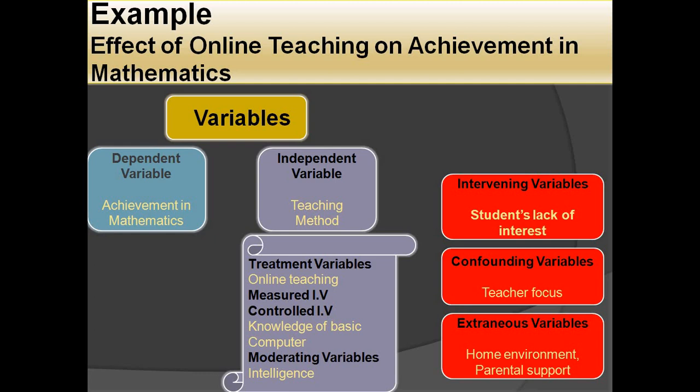Here is an example of a research problem: the effect of online teaching on achievement in mathematics. The dependent variable is achievement in mathematics. The independent variable is teaching method — online teaching versus traditional teaching. Treatment variable: online teaching. Controlled independent variable: knowledge of basic computers, which the researcher wants to control. Moderating variable: knowledge of basic computers or student intelligence. Intervening variables: students' lack of interest or lack of comfort with computers. Confounding variable: teacher focus — the teacher may unintentionally give more attention to the online teaching group. Extraneous variables: home environment and parental support.